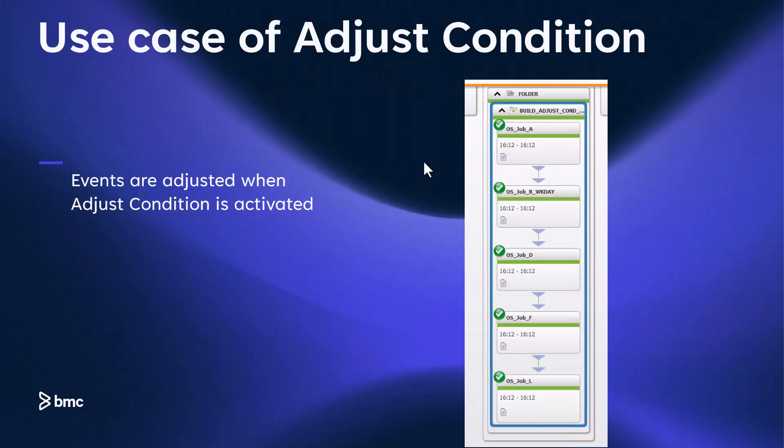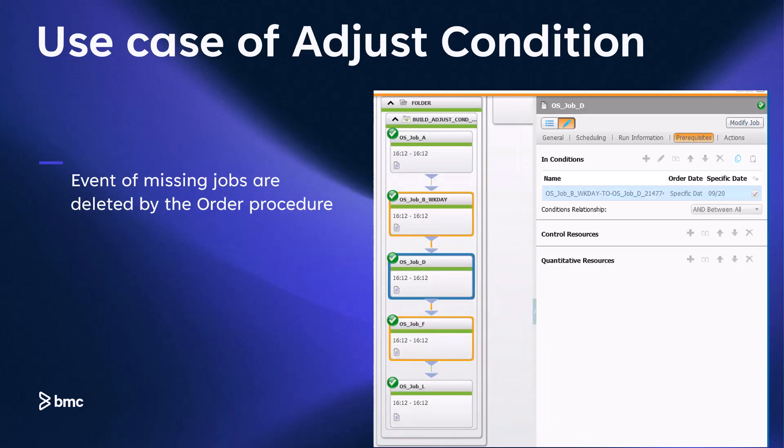Here we see the folder as it was ordered into the active domain. Because adjust condition was enabled, the missing events were adjusted to allow the flow to complete without the weekend jobs. Zooming in on job D's properties, we can see that the only prerequisite event job D is waiting for is the one generated by job B. The event from job C, which is not ordered, was removed during the ordering process.